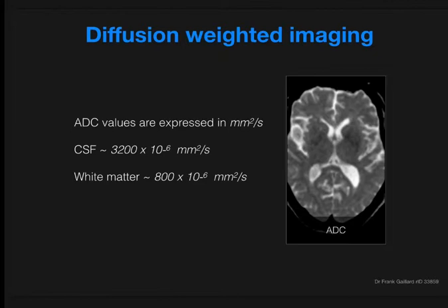Typical values — using very rounded numbers to make them easy to remember — CSF is typically 3200 times 10 to the minus 6, whereas white matter is around 800 times 10 to the minus 6.